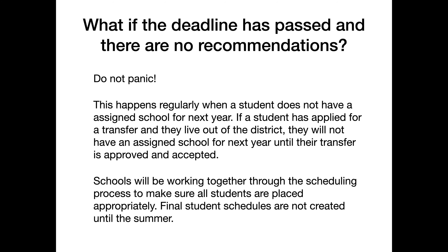What if the deadline has passed and there are still no recommendations? Please do not panic. This does happen regularly when a student does not have an assigned school for the next year. If a student has applied for a transfer and they live out of the district, they will not have an assigned school for the next year until their transfer is approved and accepted. That normally happens late March or early April.